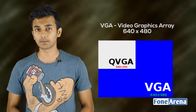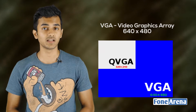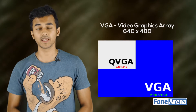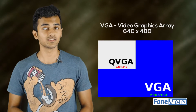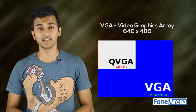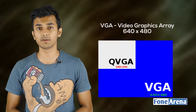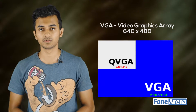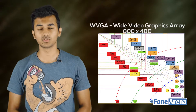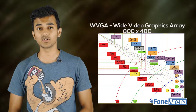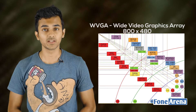The third type is VGA — Video Graphic Array. Its resolution is 640x480 pixels. The fourth type is WVGA — Wide Video Graphic Array. Its resolution is 800x480 pixels.